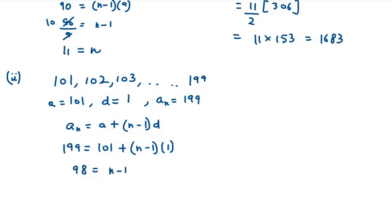Now I will bring minus 1 to the other side, so it will be 99 as n. So now we need to find sum total of 99 terms. So it will be 99 over 2 in bracket twice of a, 101 plus n minus 1, that is 98 into d, d is 1.